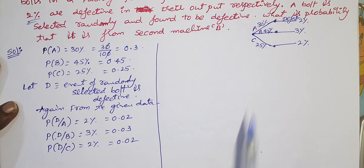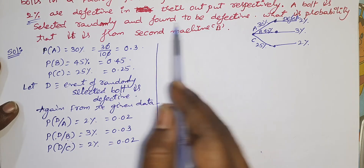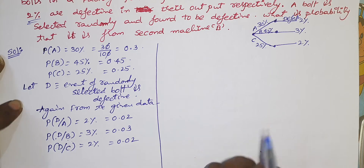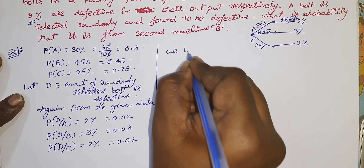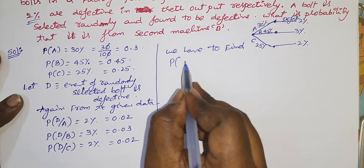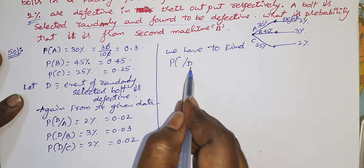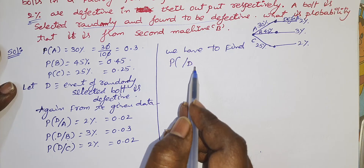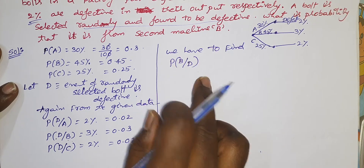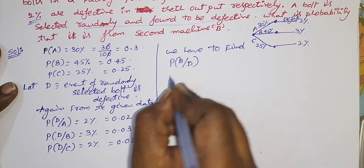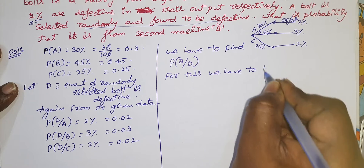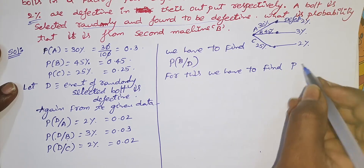Now, what is our aim? A bolt is selected randomly and found to be defective. What is the probability that it is from the second machine B? We have to find P(B|D). Already a defective bolt has been found; now we need to find out whether it came from machine B.